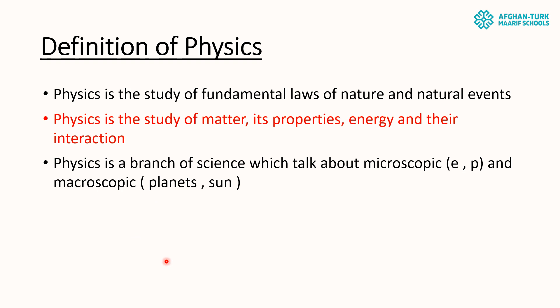What is the definition of physics? Number one: physics is the study of fundamental laws of nature and natural events. Number two: physics is the study of matter, its properties, energy, and their interaction. Number three: physics is a branch of science which talks about the microscopic — such as electrons and protons — and the macroscopic — such as planets and the sun.